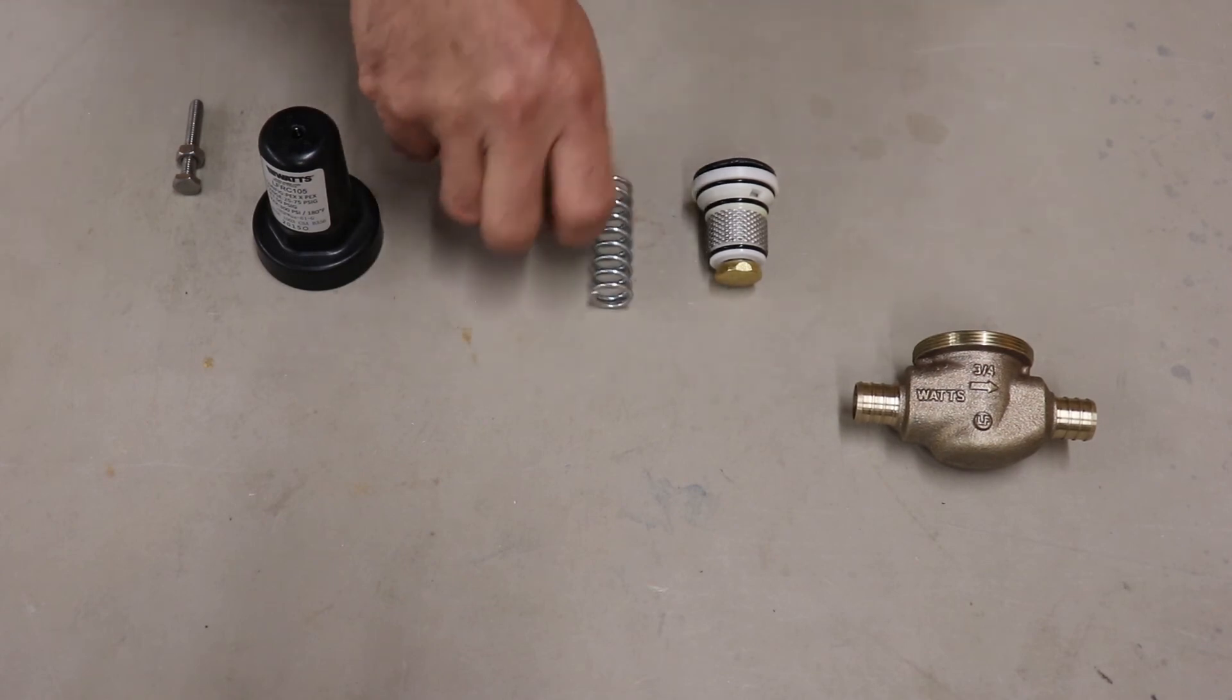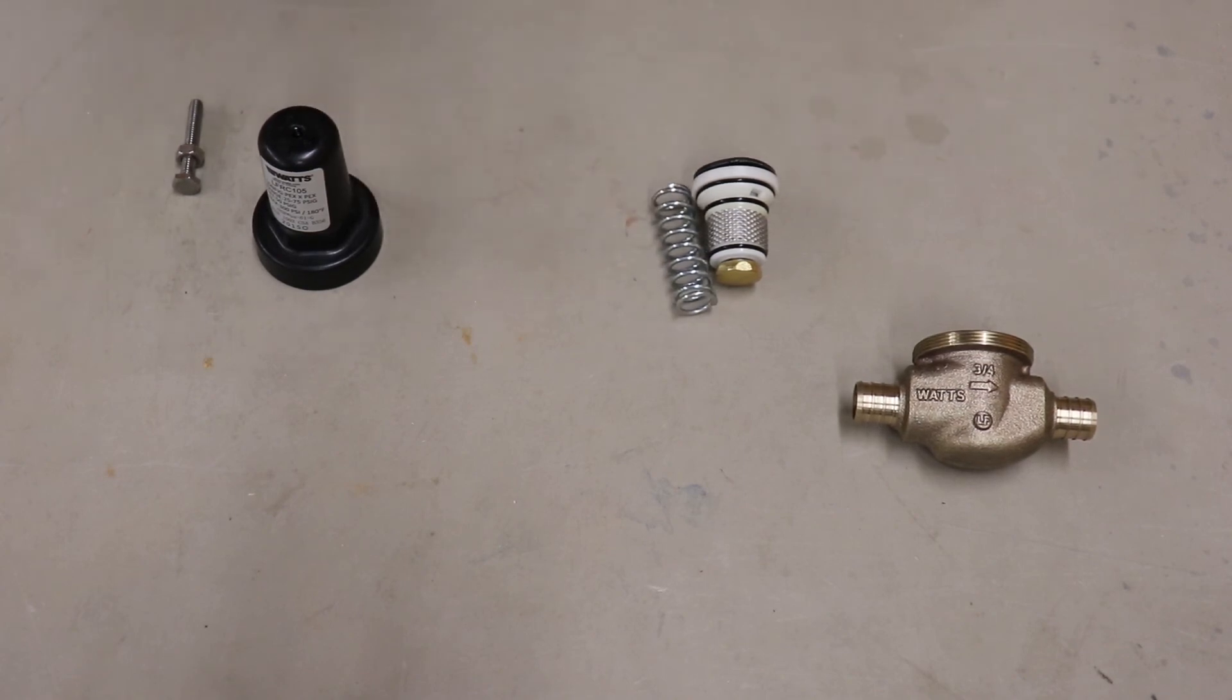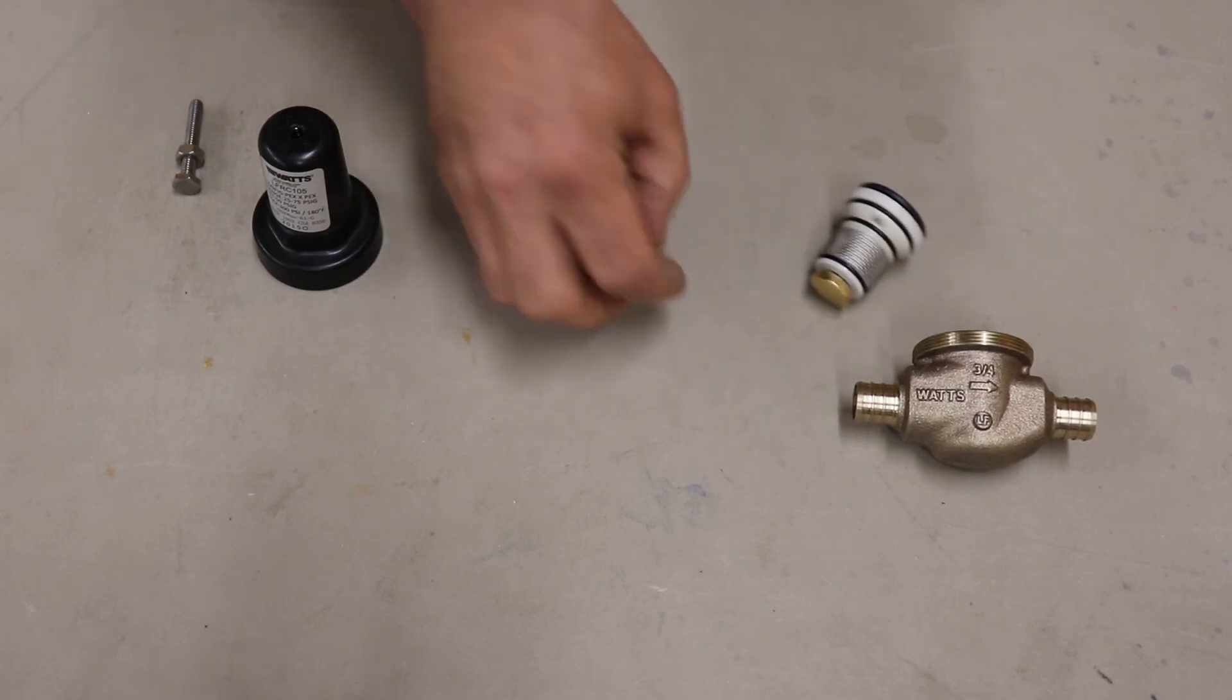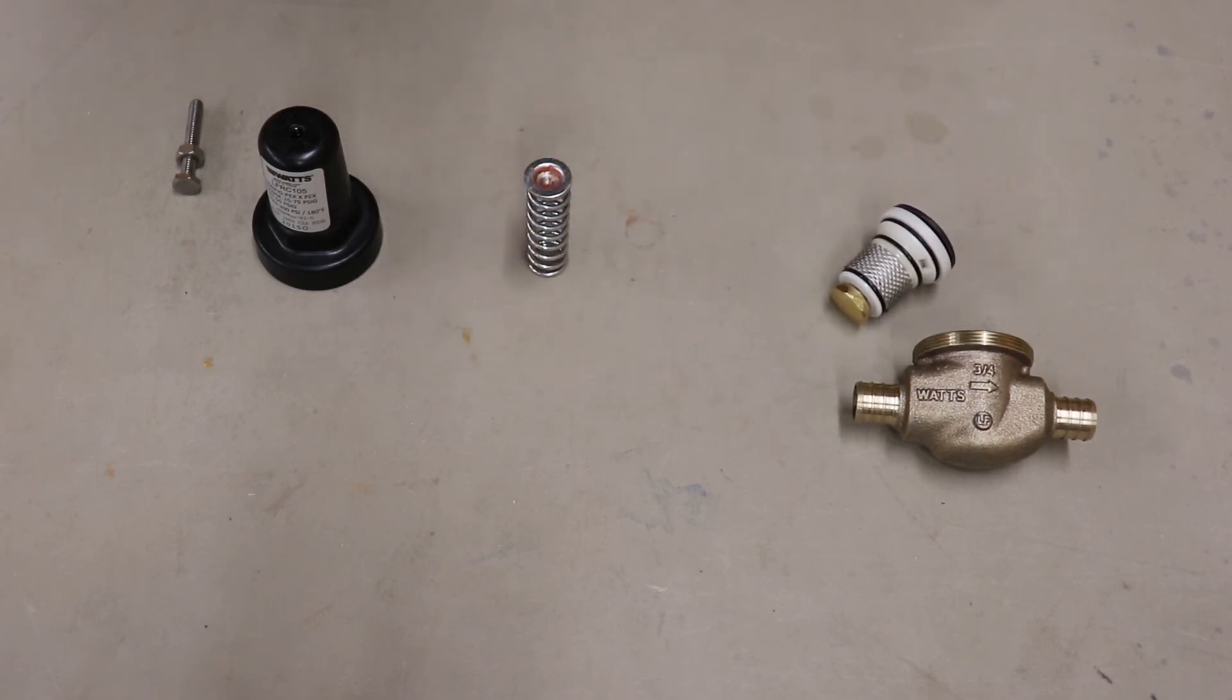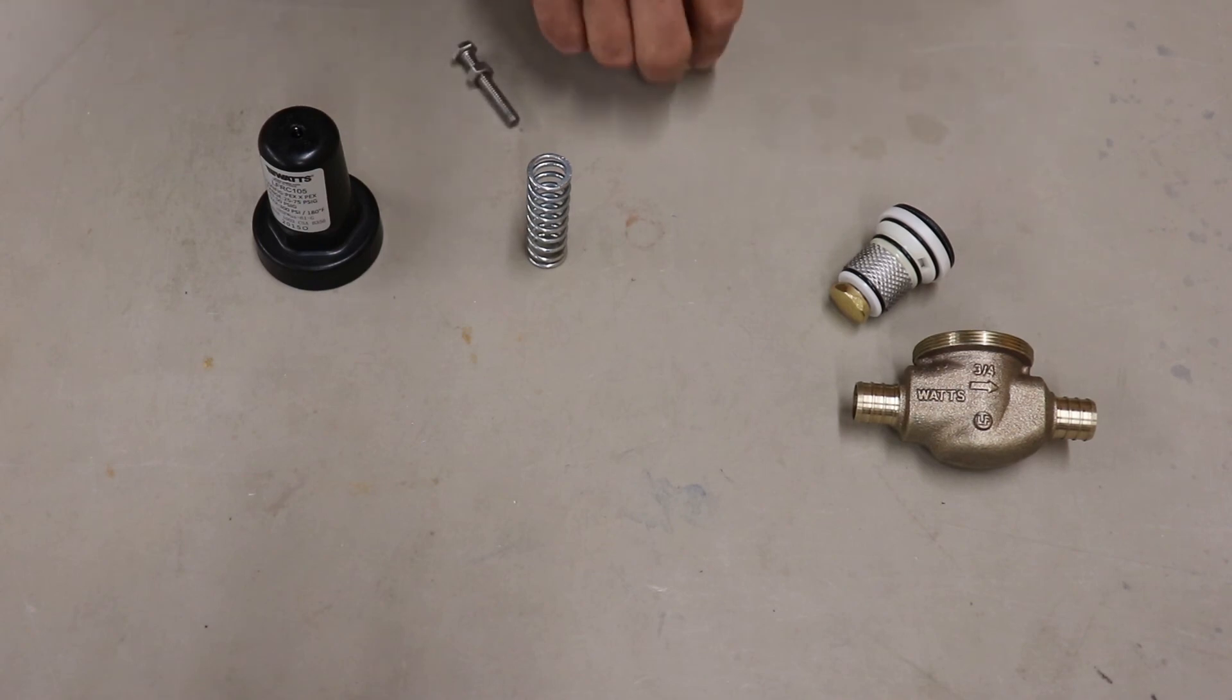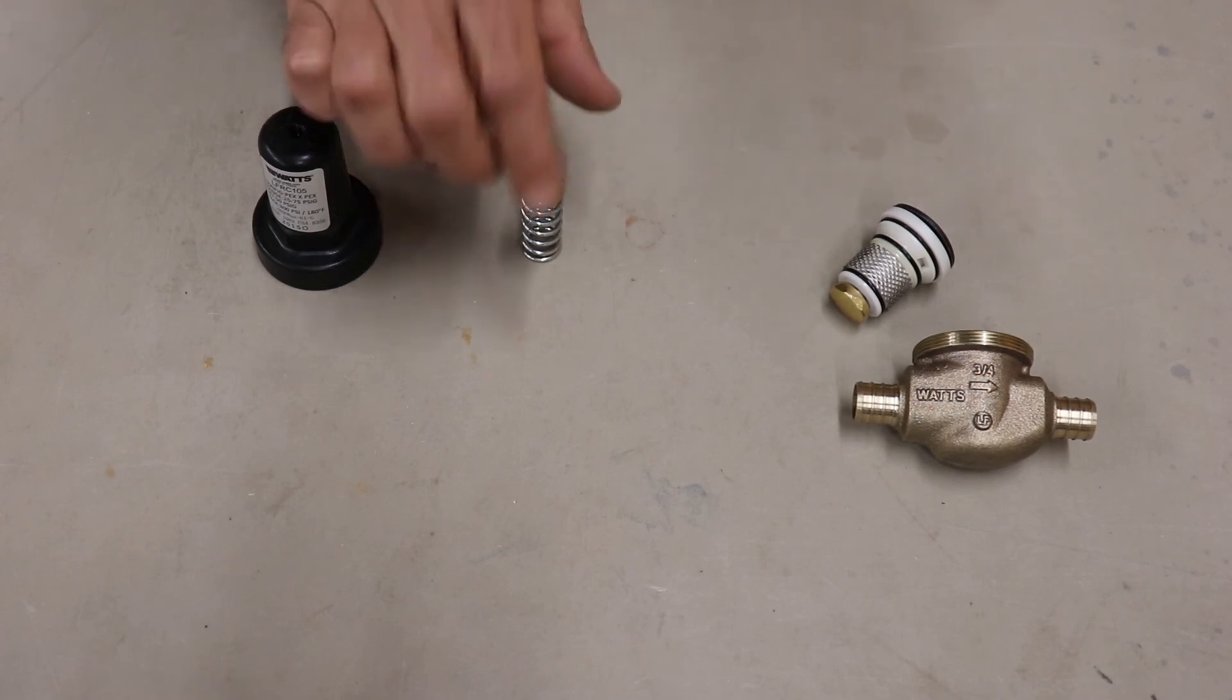Now if you ever take one of these apart you got to be really careful because there is a spring cap or spring seat here. It's a little domed thing and what that's for is it goes in the top of your spring. If you're taking this thing apart and this all flies apart on you and you lose your little spring cap, it's no longer going to work because that bolt is just going to fall through that spring. That's what this cap is for, it's so it rides on that bolt and you can tighten this spring down.